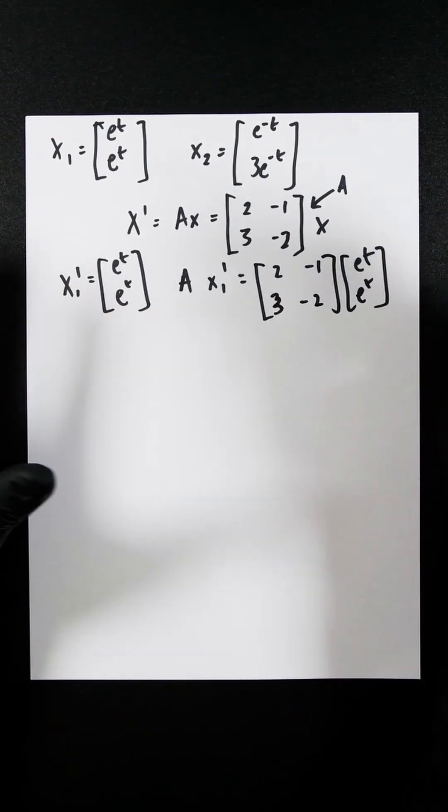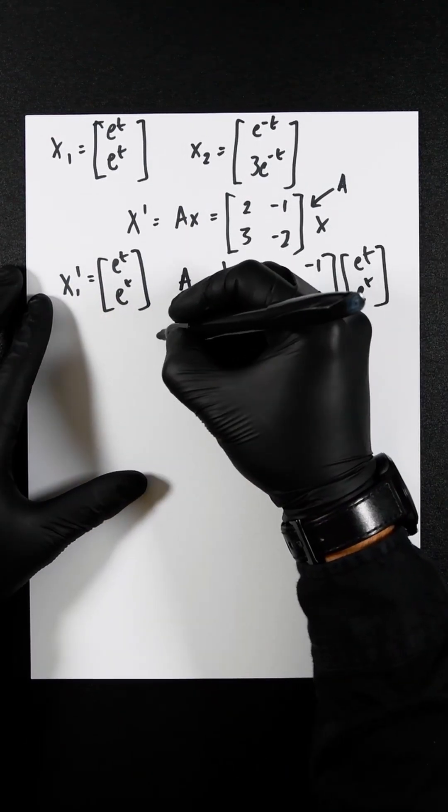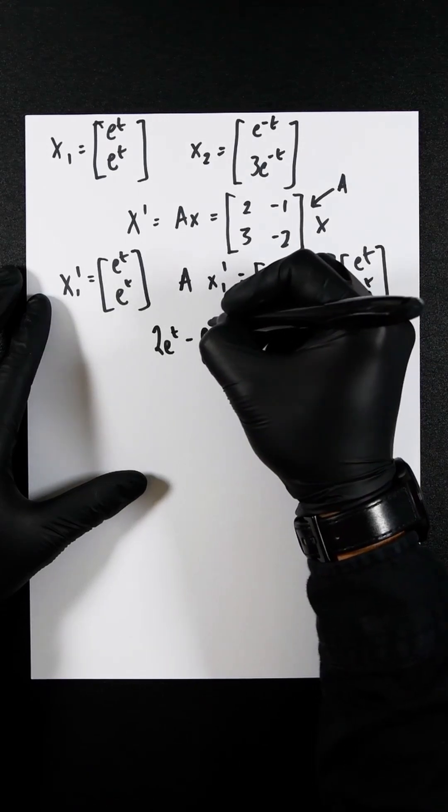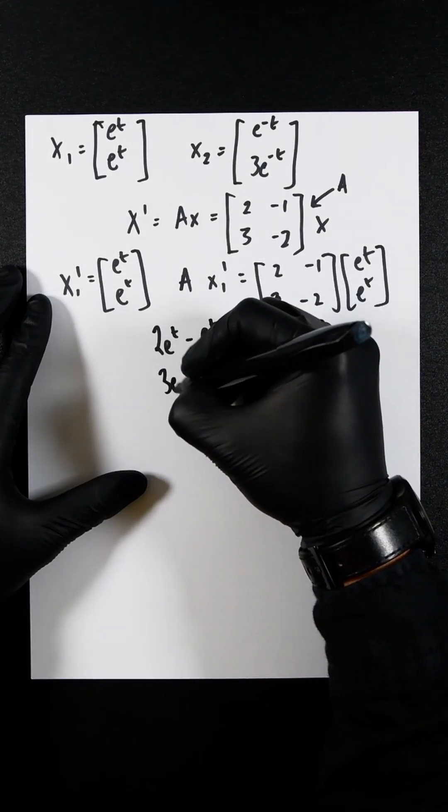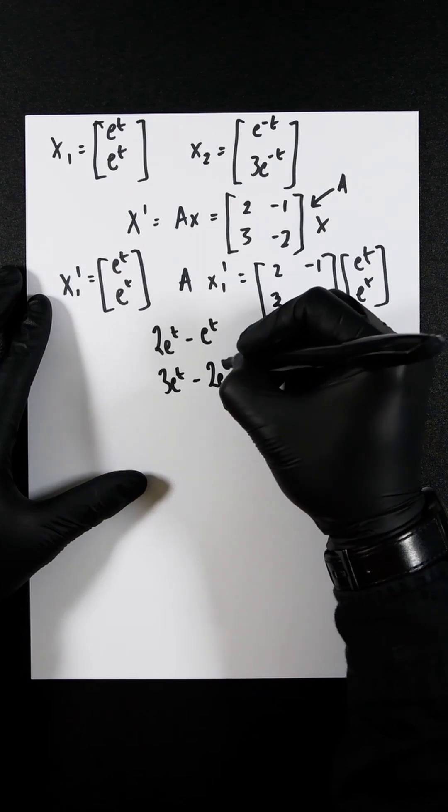If we now multiply this out, got a video on how to multiply this, you're going to have 2e to the t minus e to the t, 3e to the t minus 2e to the t.